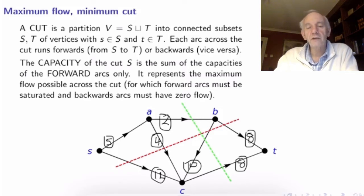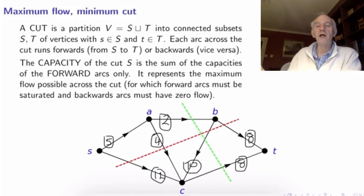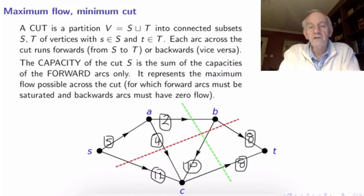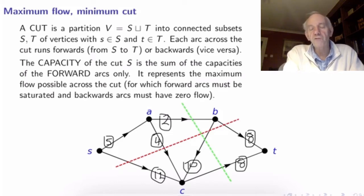This tool is called a cut, and it's exactly what it sounds like. It amounts to cutting the network into two halves, like these two dotted cuts here - one is green and one is red. Both of those are cuts of this network. In what I'm talking about at the moment we don't worry about any flows. The discussion of cuts and their capacities can be entirely carried out by looking at the network without reference to a particular flow.